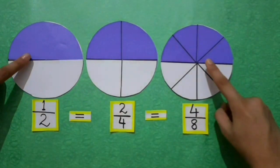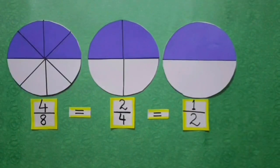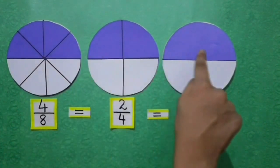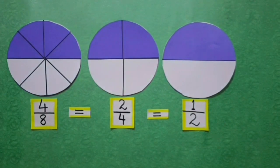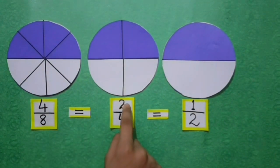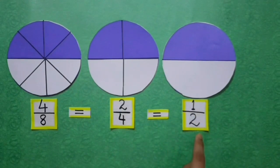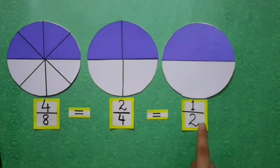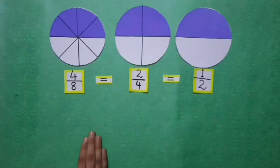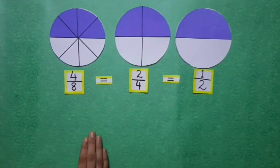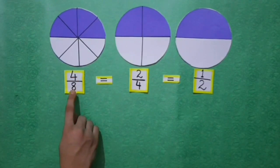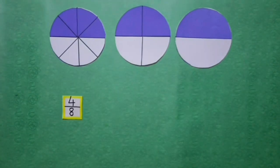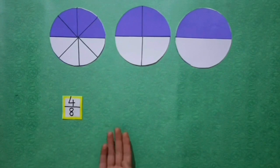Students, now I have interchanged the place of the first and third circle. You can see all are representing the same colored portion. So 4 upon 8, 2 upon 4, and 1 upon 2 are all equivalent fractions. We cannot find out the lowest form of 1 upon 2. So the fraction 1 upon 2 is the lowest form of 4 upon 8. Now let us solve this in mathematical terms. To find out the lowest form of a fraction, we have to find out an equivalent fraction whose numerator and denominator cannot be further divided by a number other than 1.